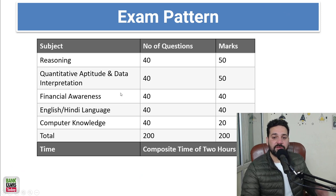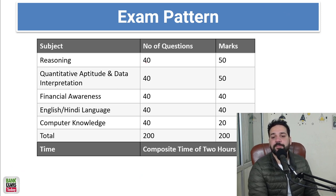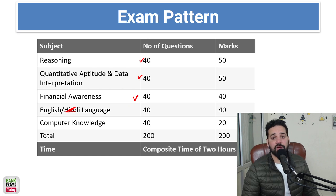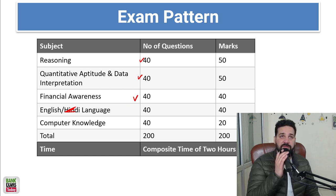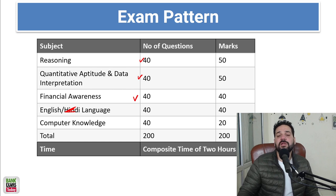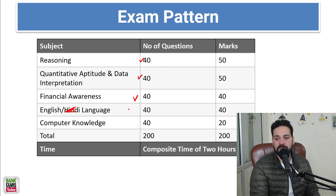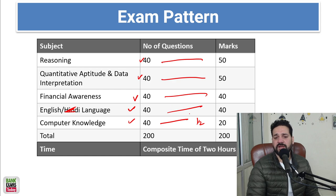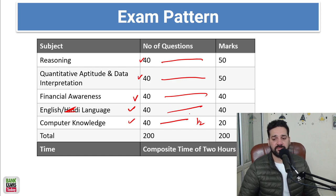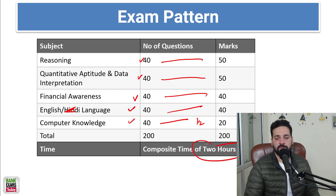Let's start with the examination pattern. The subjects are reasoning ability, quantitative aptitude, financial awareness, and English language. I hope you are opting for English language. If you are confused between English and Hindi, opt for English. If your English is really bad and your Hindi is really good, then opt for Hindi. Computer is also there, but one computer question is equal to half a mark. Quant and reasoning have 40 questions for 50 marks. Financial awareness and English language have 40 questions for 40 marks. A composite time of 2 hours is allotted.